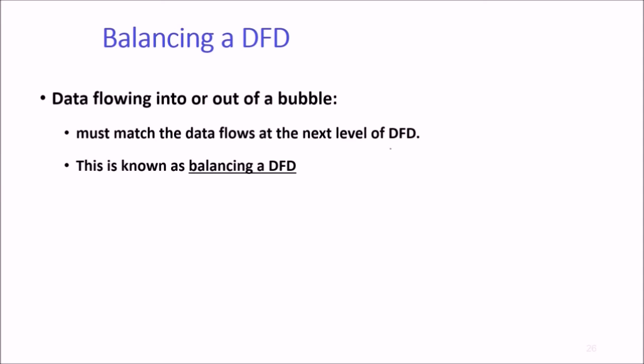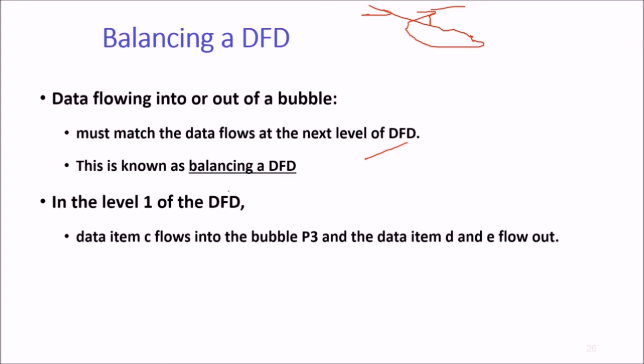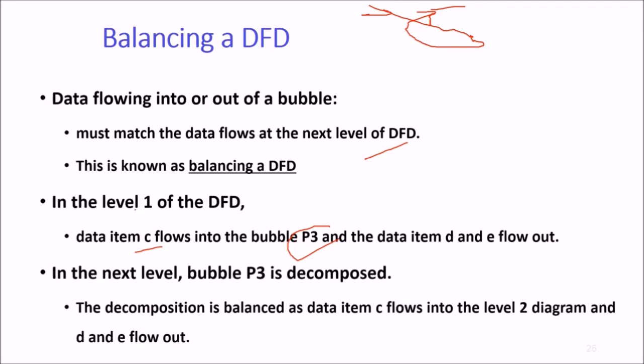How to balance a DFD? Data flows in a bubble, flowing in and out. This data flowing must match the data flow at the next level of DFD. We call it balancing a DFD. In level 1 of the DFD, data item C flows into bubble P3 and data items D and E flow out. In the next level, bubble P3 is decomposed and decomposition is balanced as data item C flows into the level 2 diagram and D and E flow out.